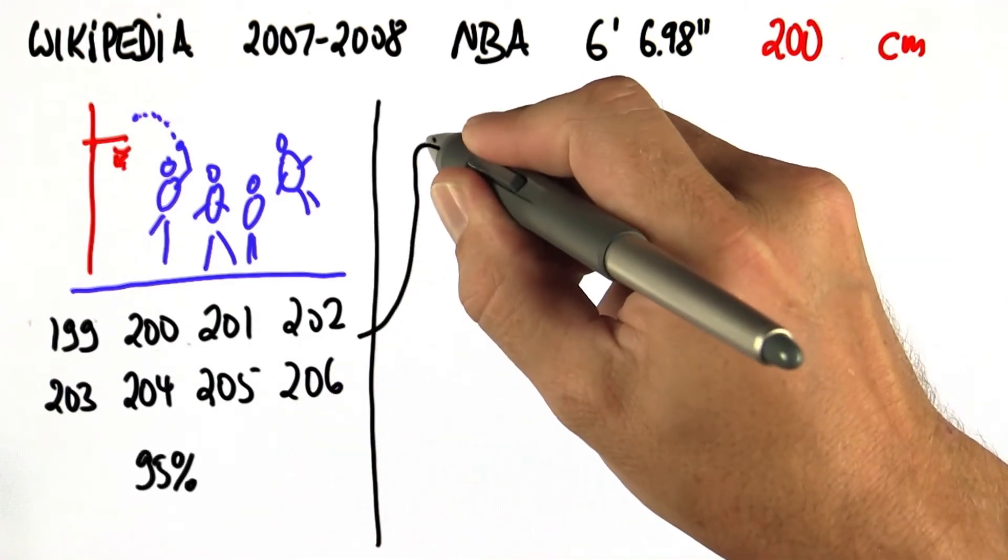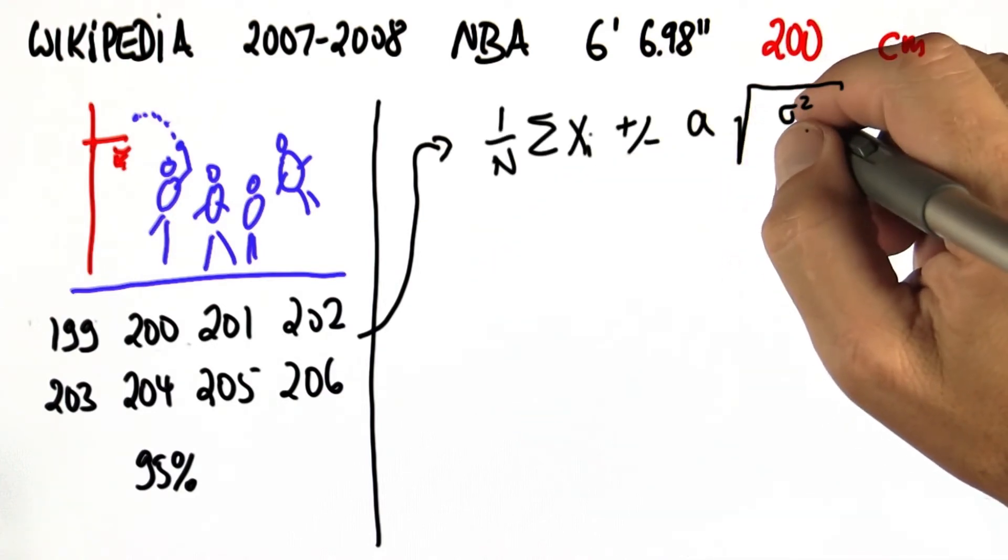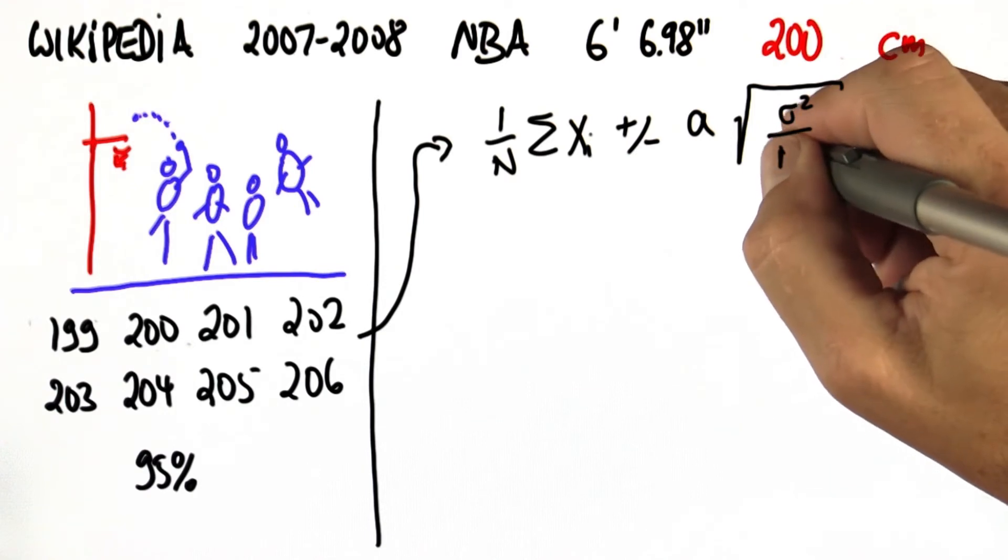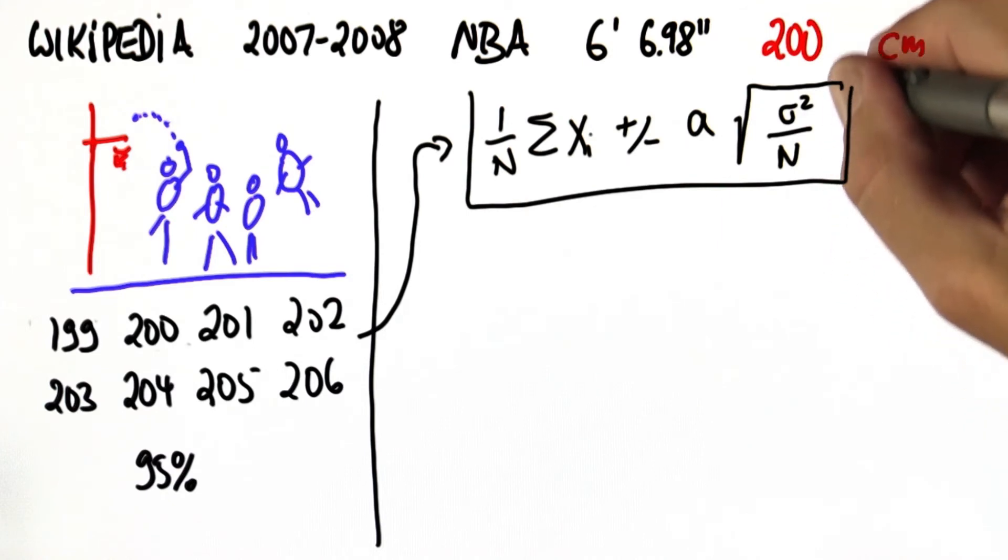You learned about confidence intervals, which is the mean plus minus a probability factor, a factor taken from the t-table times the square root of the empirical variance over n.